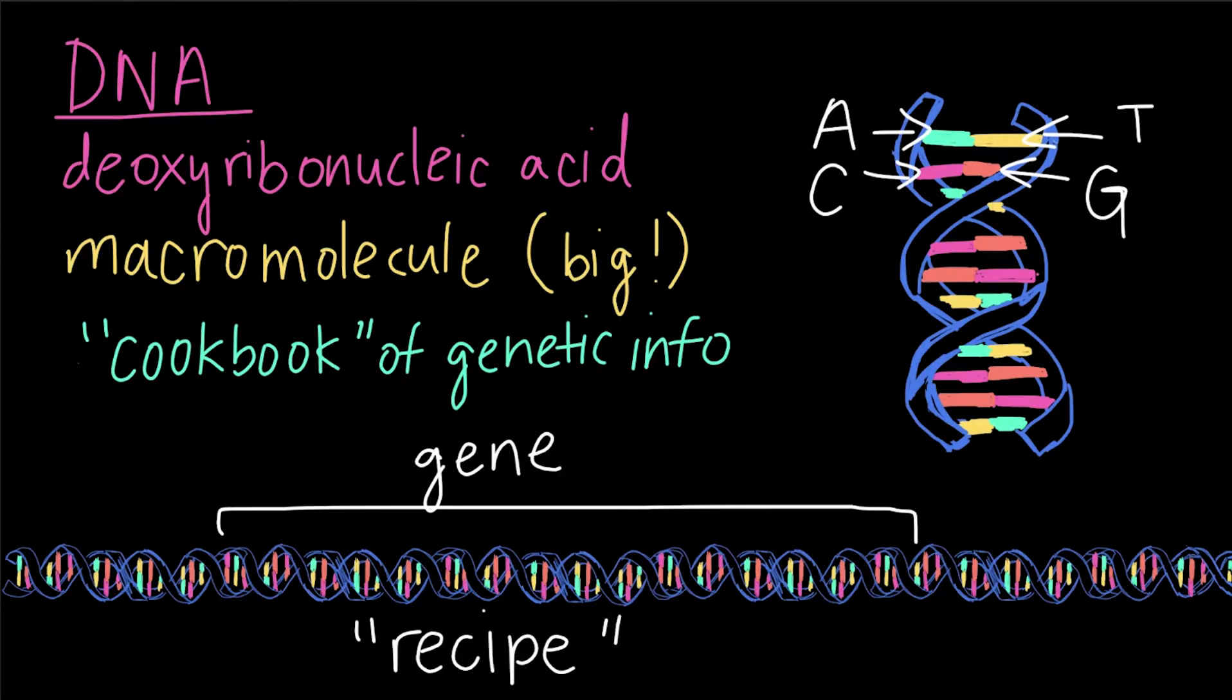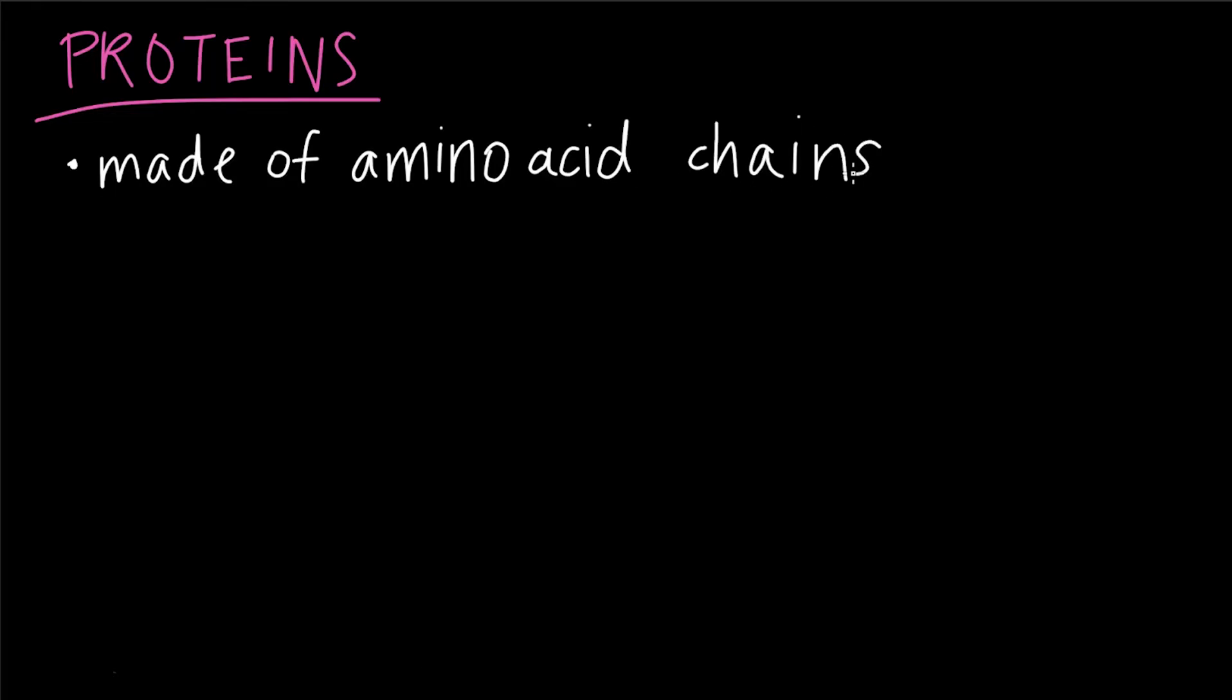But what do these gene recipes make? Many genes encode proteins, which are made of long sequences or chains of amino acids. Genes provide instructions for how to create these chains. Thinking back to how genes are like recipes, because each gene has a different set of ingredients, or in this case, a different nucleotide sequence, different genes would therefore encode different proteins.